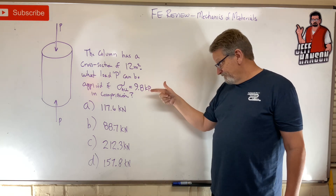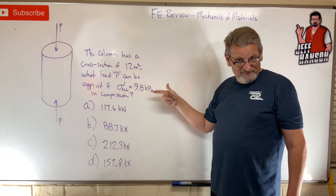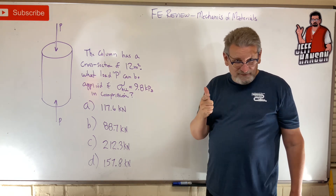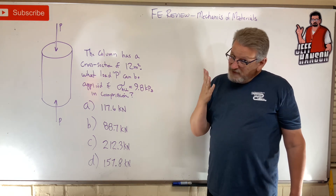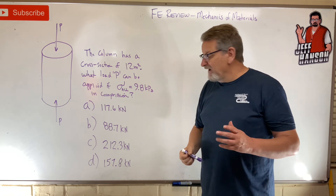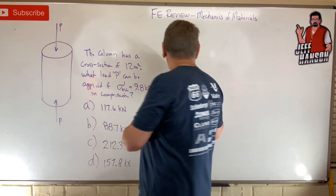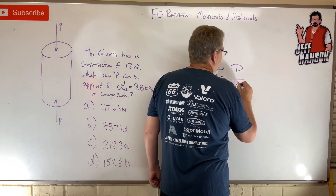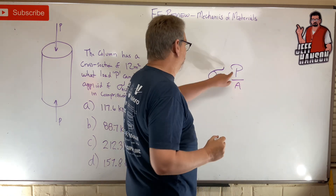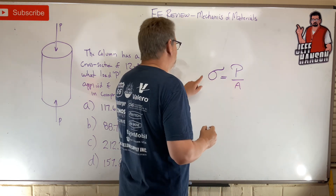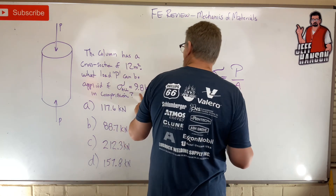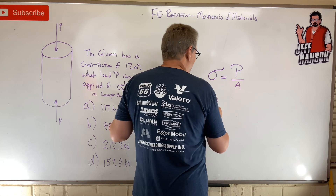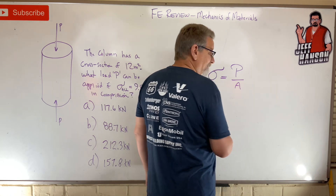Did you do it? I think this one is pretty easy — as simple as sigma equals P over A: stress equals force over area. The allowable stress is 9,800 — that's in kilopascals, which I'm putting in Pascals, i.e., newtons over meters squared.